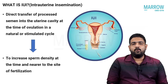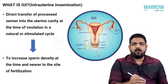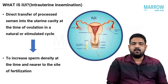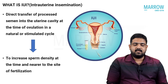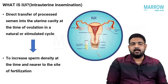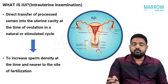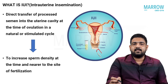So what is IUI? How do you define IUI? It is a direct transfer of processed spermatozoa into the uterine cavity at the time of ovulation in a natural or stimulated cycle. You can see this picture — this is the vagina, we have the uterine cavity and the fallopian tubes, and we know fertilization usually occurs in the fallopian tubes.